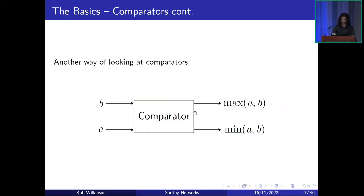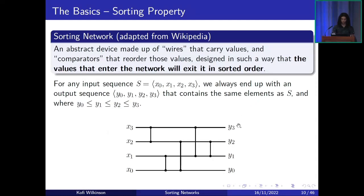Another way of looking at comparators: if a comparator takes in two values A and B, it will place the minimum of the two on the bottom wire and the larger on the top. The sorting property of a sorting network is what actually makes it useful. For any input sequence S, we always end up with an output sequence that contains the same elements as our input, and this output is in sorted order.